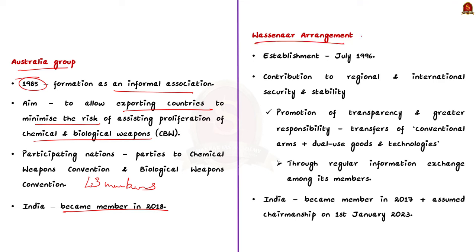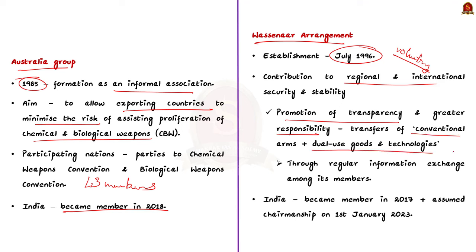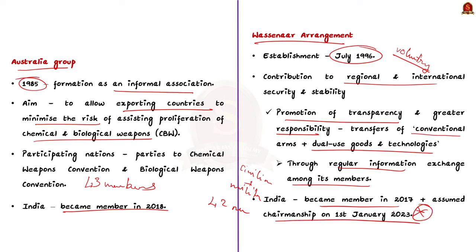The Wassenaar agreement was established in July 1996. It is a voluntary export control regime contributing to regional and international security and stability by promoting transparency and greater responsibility in the transfer of conventional arms and dual-use goods and technologies through regular information exchange among its members. Dual-use goods means software and technology that can be used for both civilian and military applications. Currently 42 member countries are there. India became a member in 2017 and assumed the chairmanship of the Wassenaar agreement on 1st January 2023 for a period of one year.